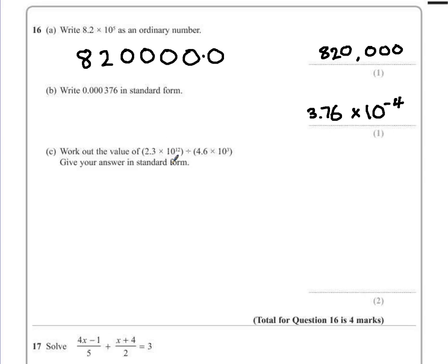Now this could be quite tricky. You could start writing out these numbers in full and then do a very long division. The way that I would approach this is to write it as a fraction: 2.3 times 10 to the 12 all divided by 4.6 times 10 to the 3.